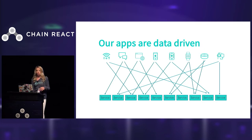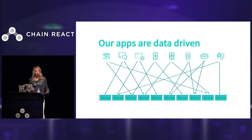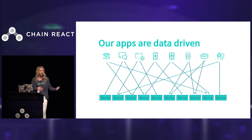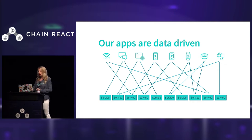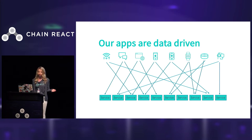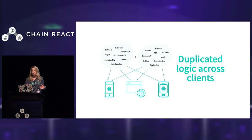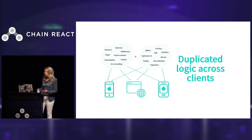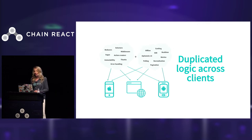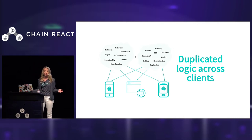As product developers, the apps that we build are increasingly data-driven. We're building for mobile, wearables, VR, and IoT — all using these same React Native primitives — and our clients are requesting data from a variety of different microservices. Over time this process starts to get messy, and to make matters worse we're duplicating all of this data management code for fetching, sorting, and aggregating data across every new client that we build. Not only does this exponentially increase your maintenance burden, it also leads to a lot of bugs and duplication.